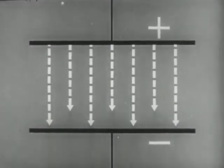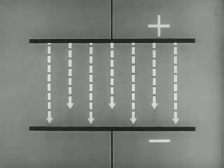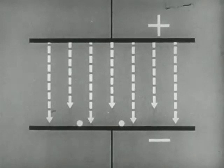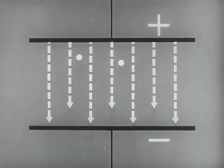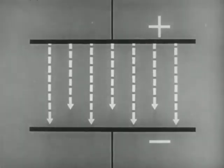In an electric field alone, the direction of the force exerted on an electron is opposite to the direction of the field — that is, electrons tend to move from low potential to high potential. In a magnetic field, the force on an electron is directed at right angles to both the velocity of the electron and the direction of the field, so the resulting trajectory is clockwise.